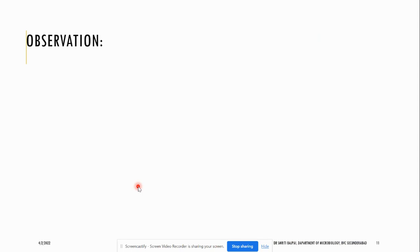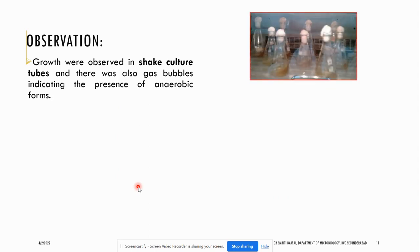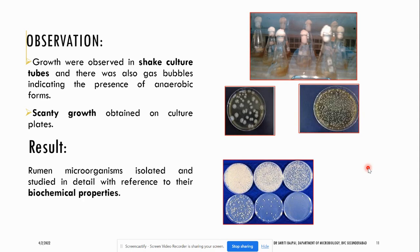After the incubation period we will get our results. In the shake culture tubes, gas bubbles were observed, showing the presence of anaerobic forms. Based on dilution, growth will also be obtained on different culture plates. Once these growths are obtained, we need to confirm the organisms present in the rumen using different biochemical tests, based on the biochemical properties of the different bacteria.